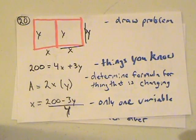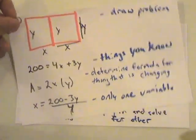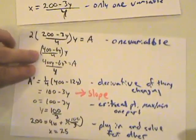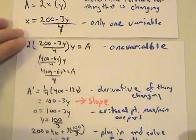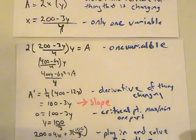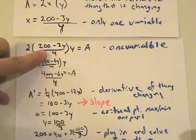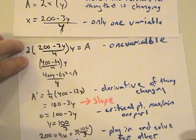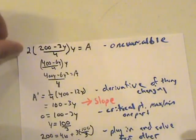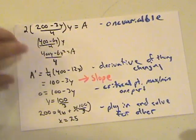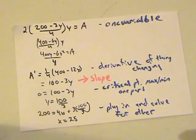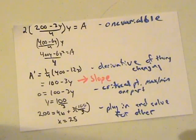And we want to only have one variable so we figured out just x. So now we're going to apply the just x one variable into it and we're taking the 200 minus 3y over 4 and putting it into the x. So now that we only have just y in the area and simplified out, and this is the simplified version, 400y minus 6y squared over 4.